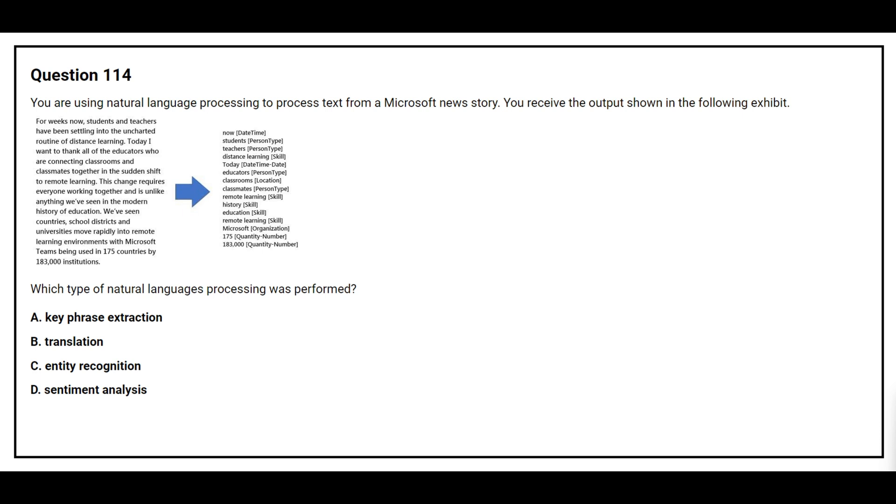Question number 114. You are using natural language processing to process text from a Microsoft news story. You received the output shown in the following exhibit. Which type of natural language processing was performed? Option A, key phrase extraction. Option B, translation. Option C, entity recognition. Option D, sentiment analysis. The correct answer is Option C, entity recognition.